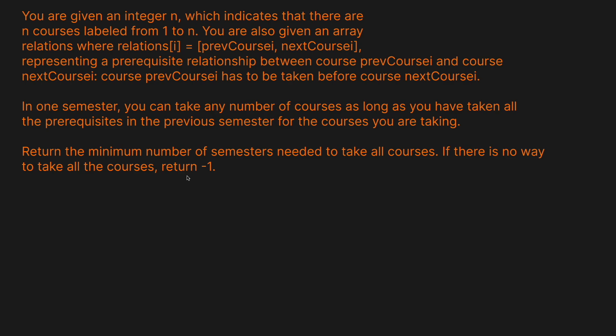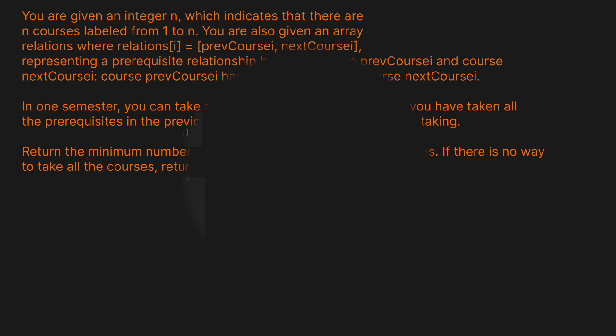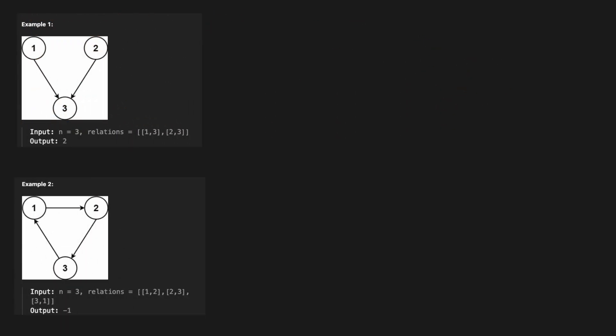Now let's look at how we might approach this problem. Before we get into the solution, let's look at the two basic examples they give us, because they give us big hints. The first thing you'll see in example one is that they've represented the courses like a graph — giving us a big hint that we're going to want to use a graph here.